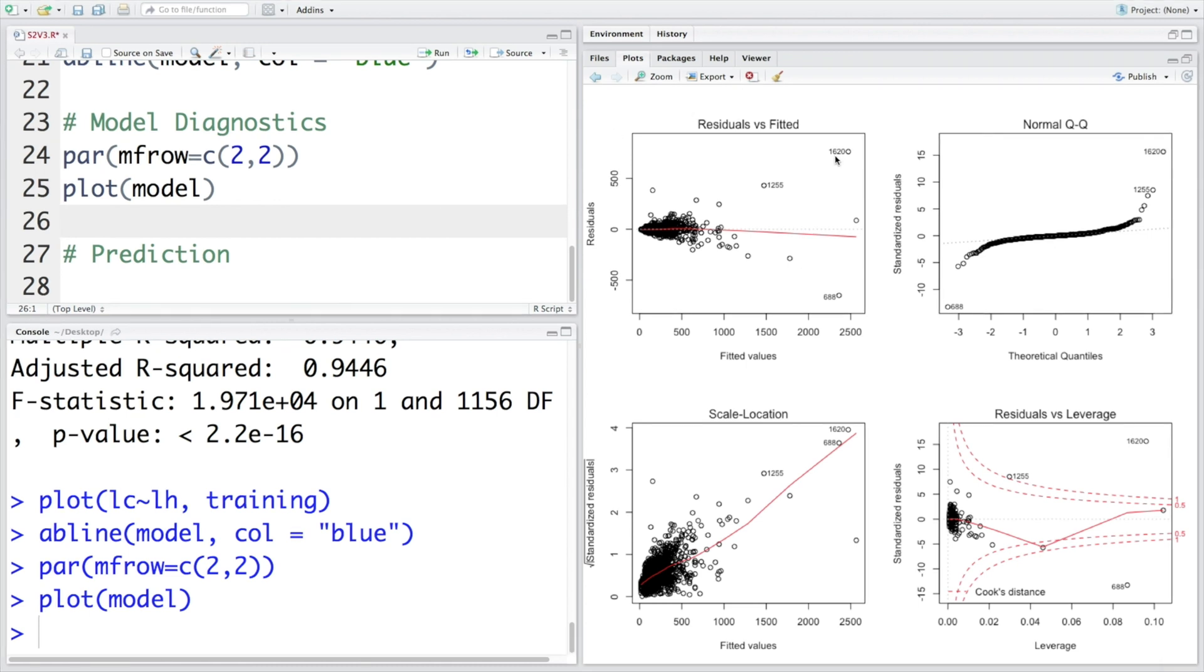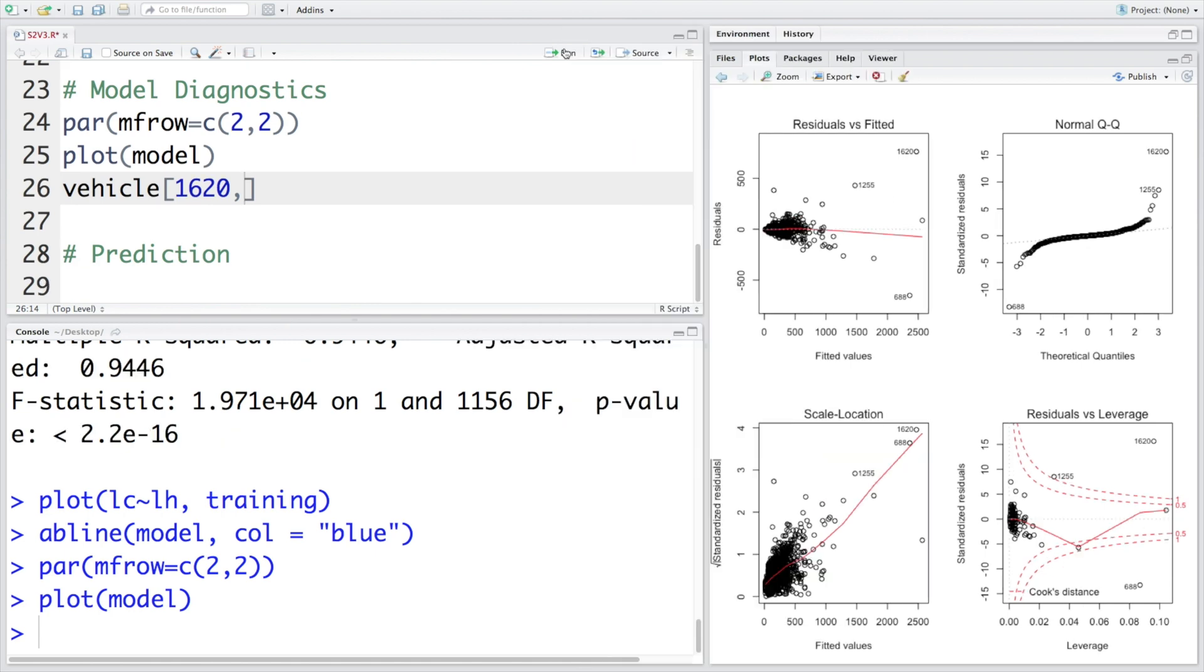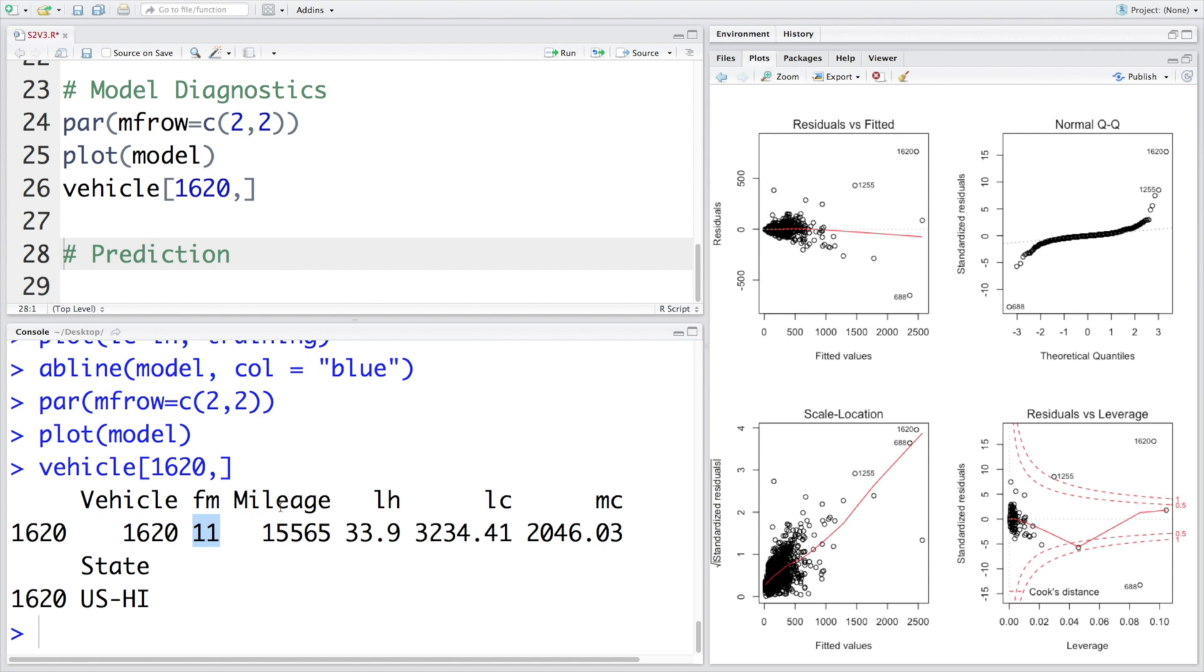If you want to look at what this 1620th value is, this is in the vehicle data. We want to look at 1620 and all columns. So this failure occurred after 11 months. Mileage at failure was 15,565 miles. What stands out is that the cost is really very high because you can see this is very far away from normal data points. The labor cost was $3,234.41, and also material cost—items or parts that were replaced. That cost itself is more than $2,000. So labor plus material cost is more than $5,000. This is a very expensive repair. It will be interesting for the company which monitors this data to look into and see whether this is a genuine repair or maybe there is a mistake or error.